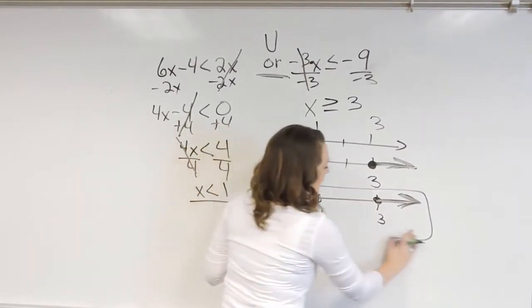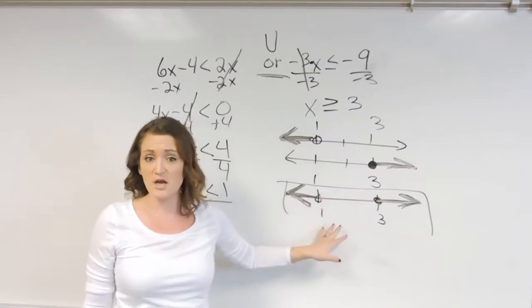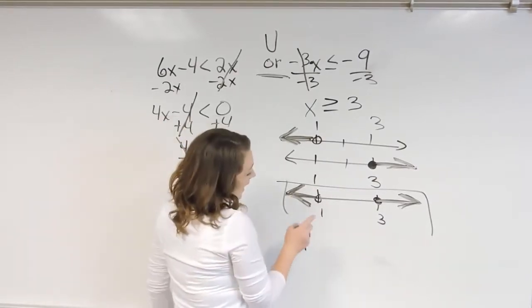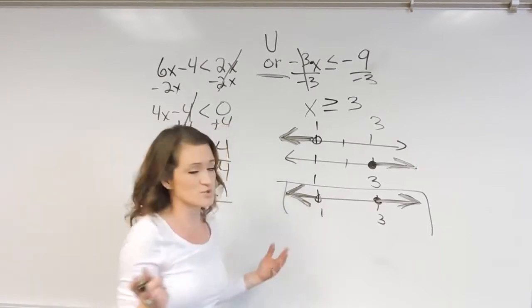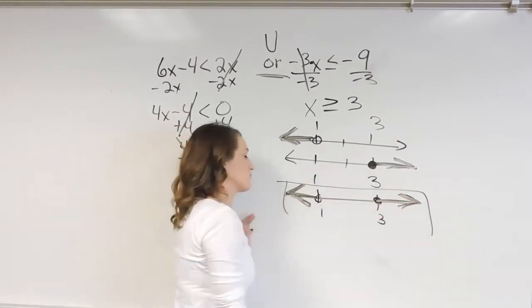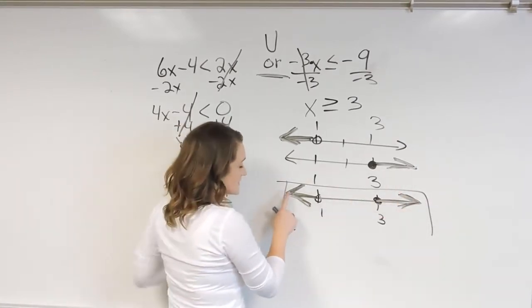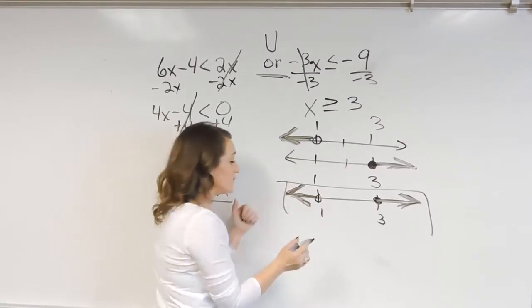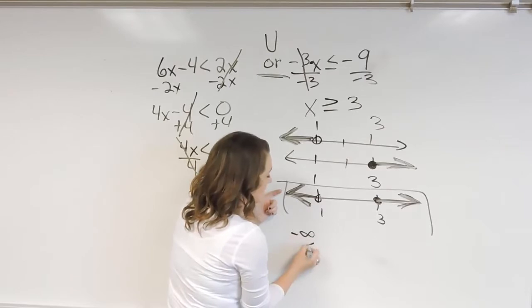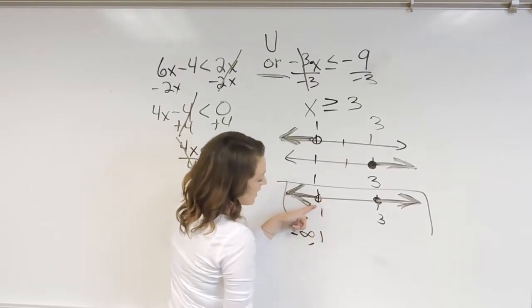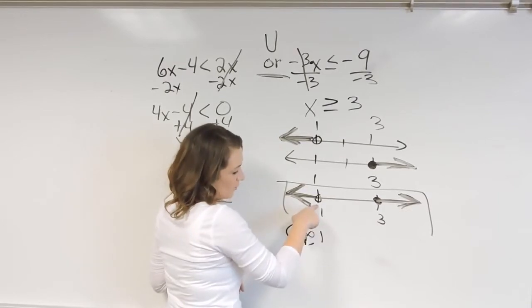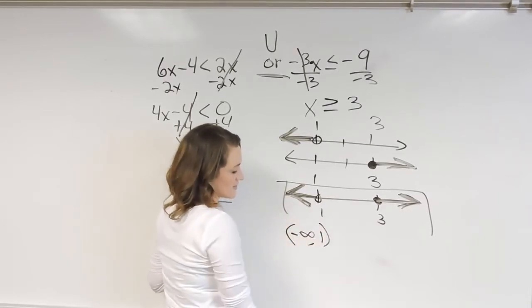Now, sometimes you can also be asked to find the interval notation of this graph here. So if you are asked for that, interval notation just represents our answers from left to right. So from the left-hand side, again, this arrow represents it's going all the way to negative infinity. So we would have negative infinity all the way to a 1. Infinities always have parentheses on them. Open dots like this always have parentheses.